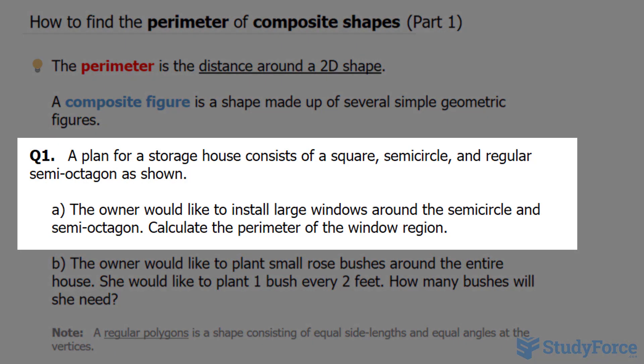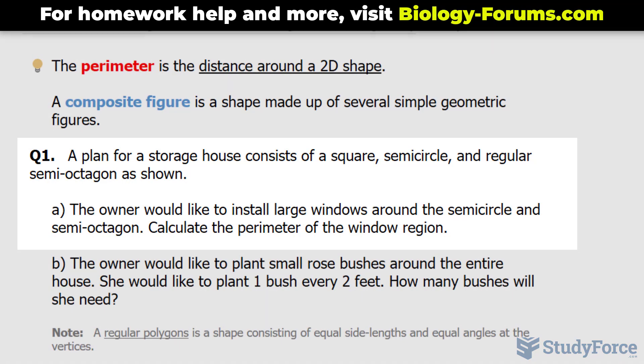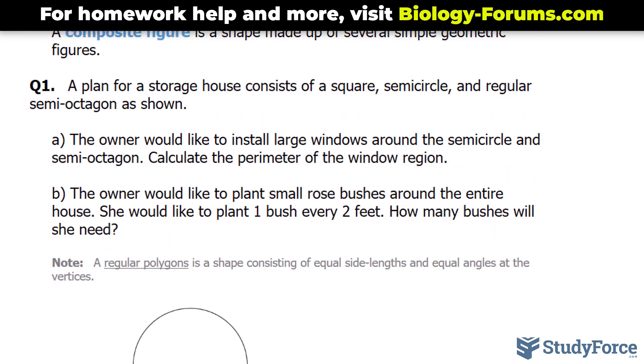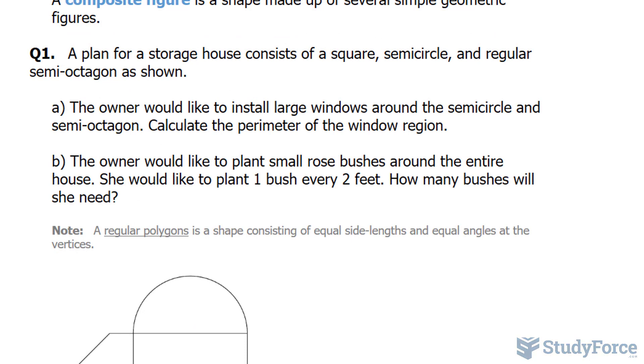With that being said, the first of two questions reads: a plan for a storage house consists of a square, a semicircle, and a regular semi-octagon as shown. The owner would like to install large windows around the semicircle and the semi-octagon. Calculate the perimeter of the window region.